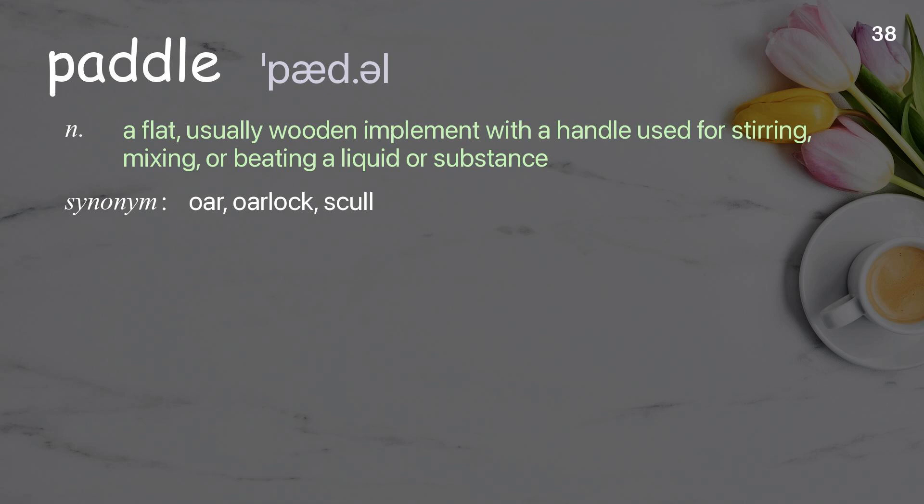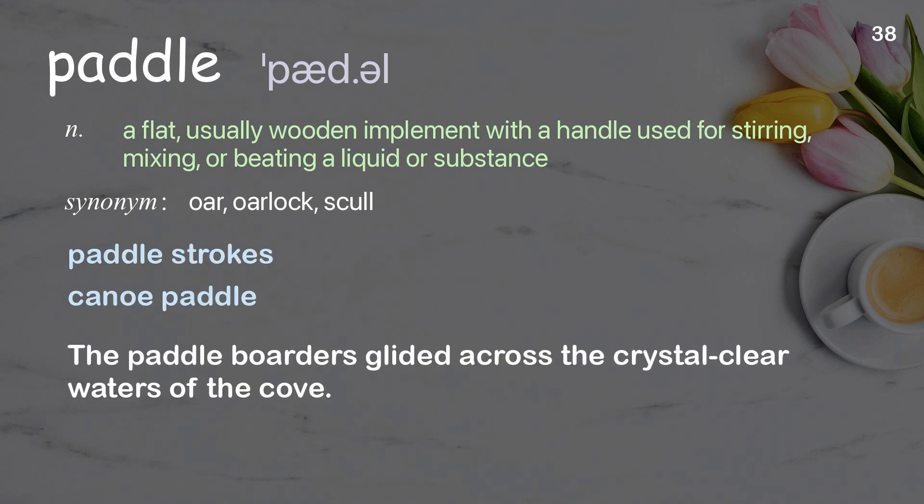Paddle. A flat, usually wooden implement with a handle used for stirring, mixing, or beating a liquid or substance. Examples: paddle strokes, canoe paddle. The paddle borders glided across the crystal-clear waters of the cove.